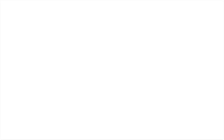Part B asks: at what position, other than infinitely remote ones, can the 65 kilogram object be placed so as to experience a net force of zero? This is going to be a quadratic equation, and you'll see why in a second.